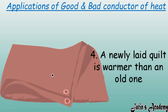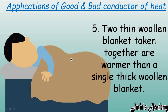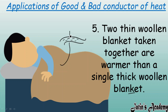Fourth application: a newly laid quilt is warmer than an old one because it has more air spaces between the fibers, trapping more air. Since air is a bad conductor of heat, it does not allow our body heat to escape. Fifth application: two thin blankets are warmer than one thick blanket because air trapped between the two blankets, being a bad conductor, prevents body heat from escaping.